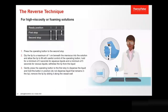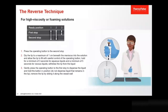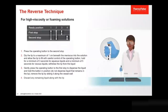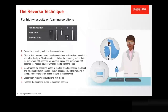Gently press the operating button to the first stop to dispense the liquid and hold the button in position. Do not dispense liquid that remains in the tip. Remove the tip by sliding it along the vessel wall. Discard any remaining liquid along with the tip. Release the operating button to the ready position.